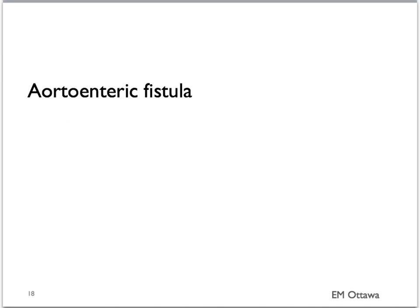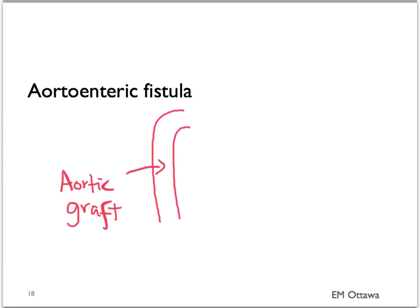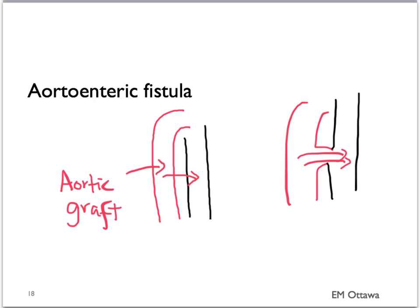A rare but disastrous cause is called an aortoenteric fistula. It is caused by a previous surgical graft in the aorta that has eroded into the GI tract. Blood now goes from the aorta into the GI tract — as you can imagine, the bleeding will be very brisk. On history, you want to elicit a history of repair of the aorta.